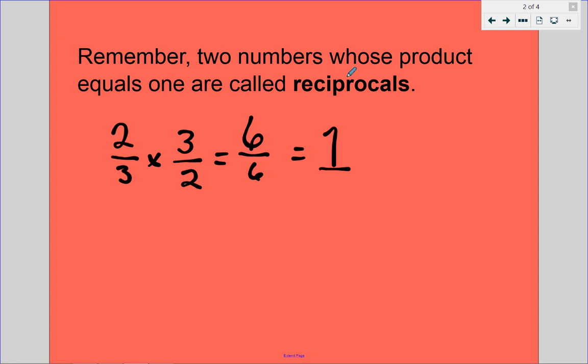Remember when two numbers whose product equals one are called reciprocals. So if I have two-thirds and I multiply it by its reciprocal, which is three halves, basically it's called the criss-cross. You flip-flop the numbers, and then you multiply them 2 times 3 is 6, 3 times 2 is 6, 6 over 6 is the same as 1.